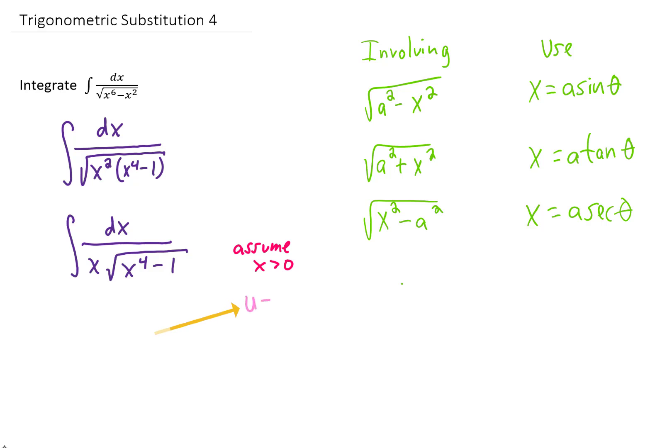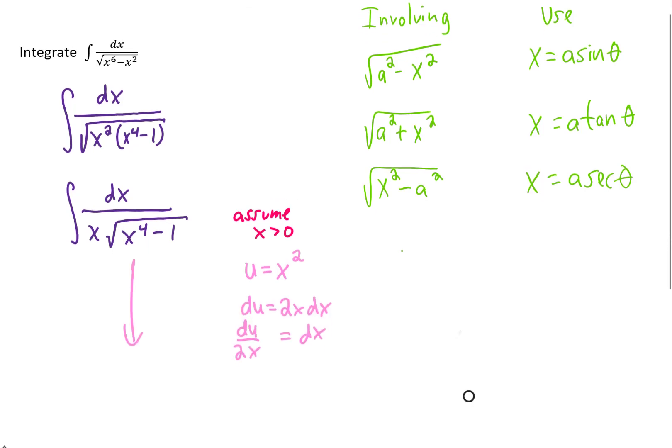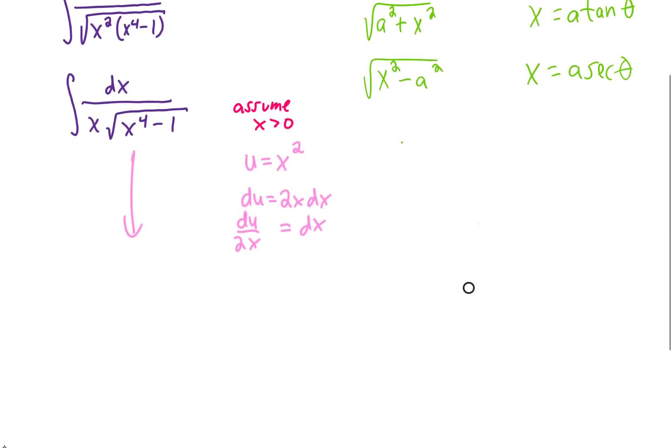So to me, that suggests that maybe we can make a substitution u equals x squared. The idea behind that being that this term then will turn into a u squared, which will look more like the forms over here. If we make all of those substitutions, let's see what we're left with.